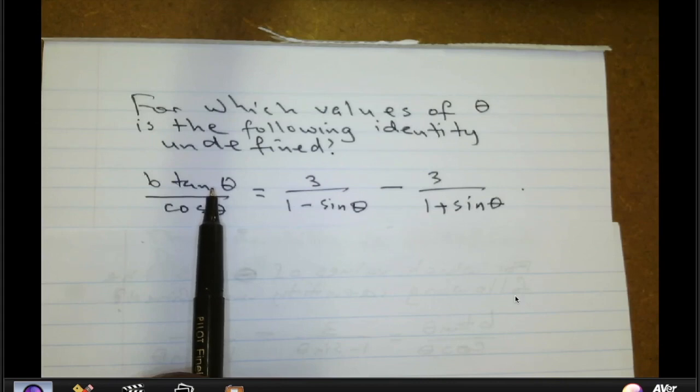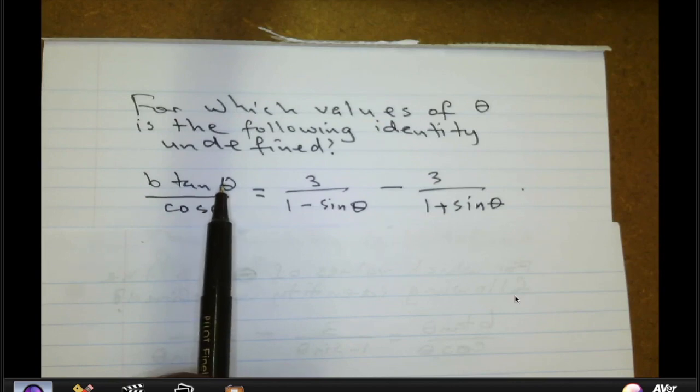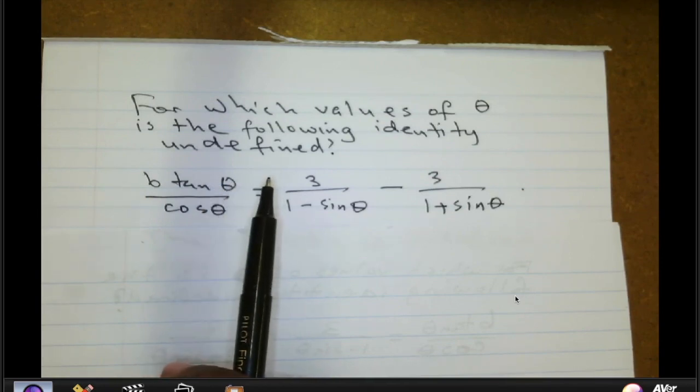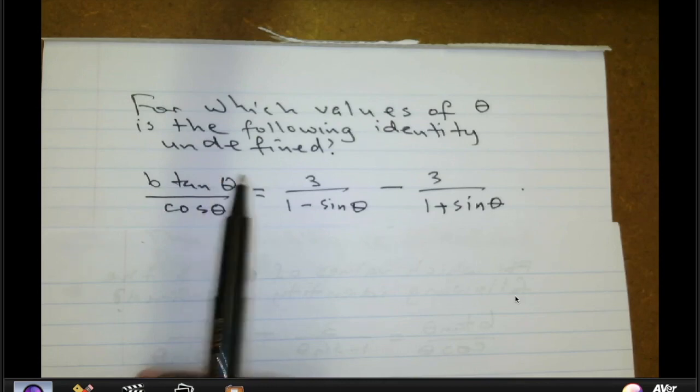And actually the asymptote is at every angle that can be represented by 90 degrees plus K times 180. So some of those angles are 270 degrees, negative 90 degrees, negative 270 degrees.